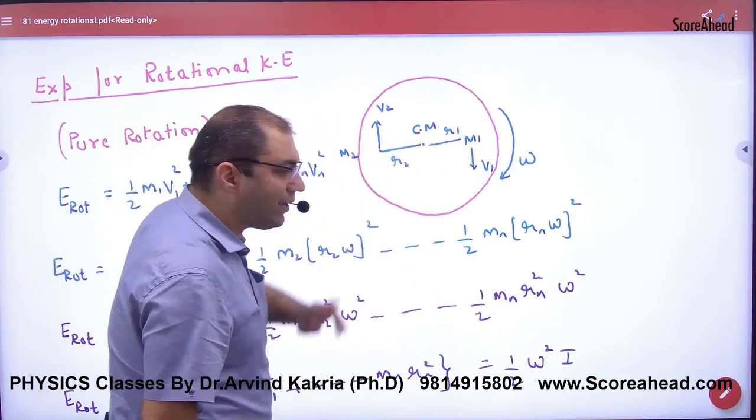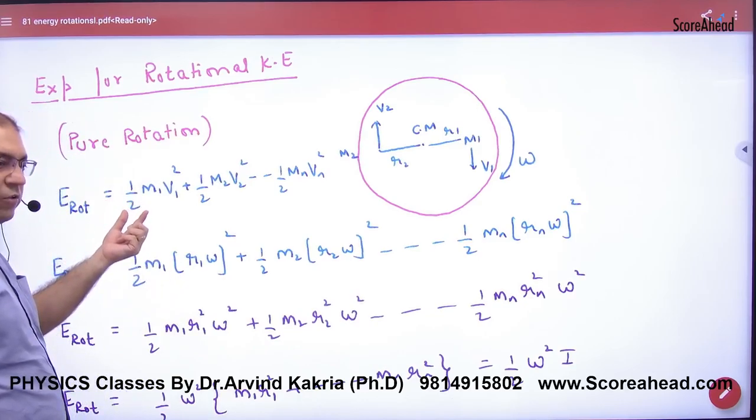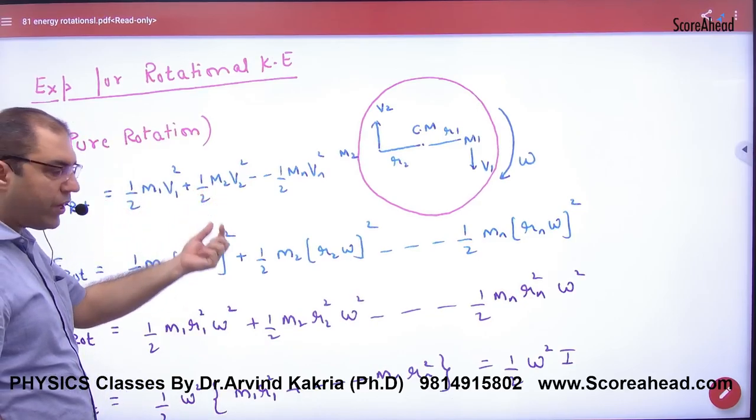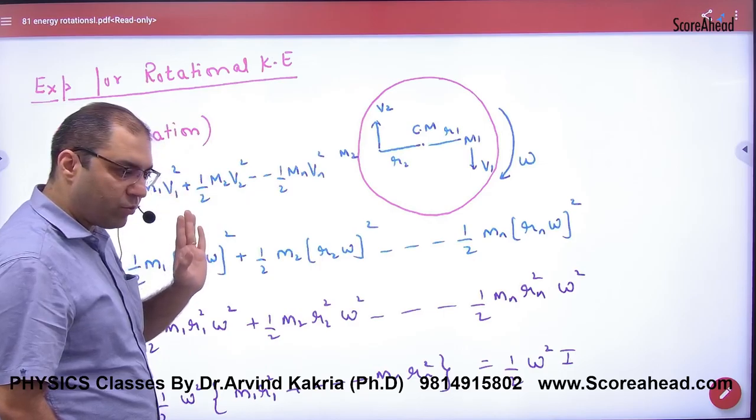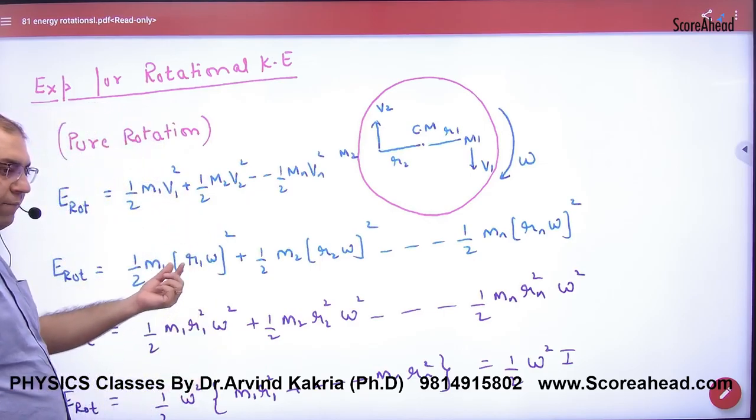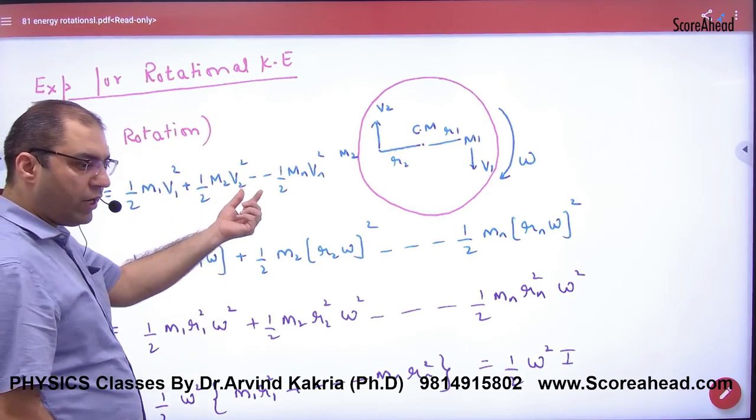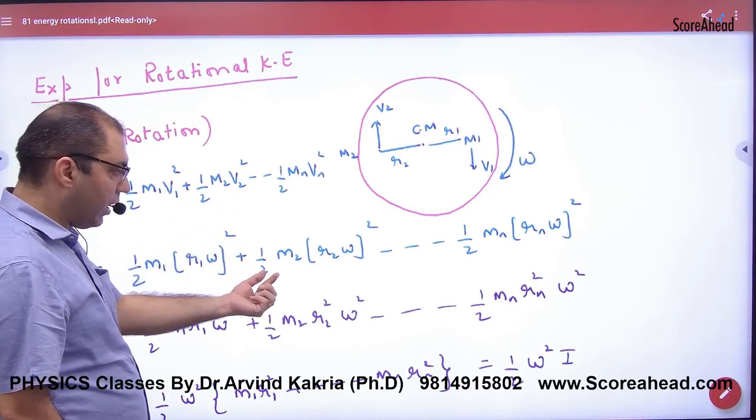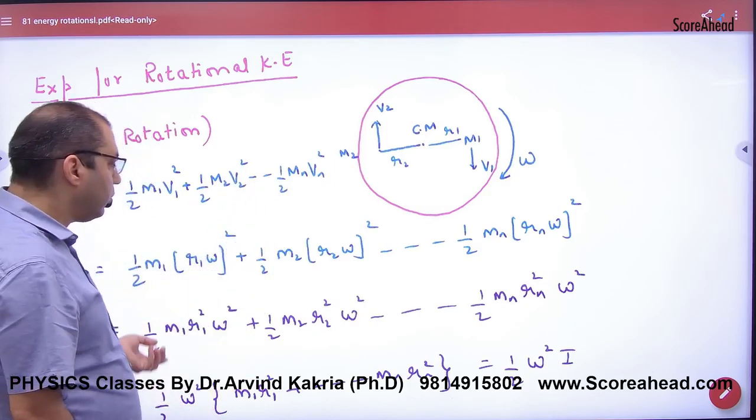So, what will the kinetic energy of this particle? Half M1 V1 square, second half M2 V2 square, up to Mn Vn square. So, what will happen in V1? R1 omega. What will happen? R2 omega. What will happen? Rn omega. I put the tangential velocity in a circle.